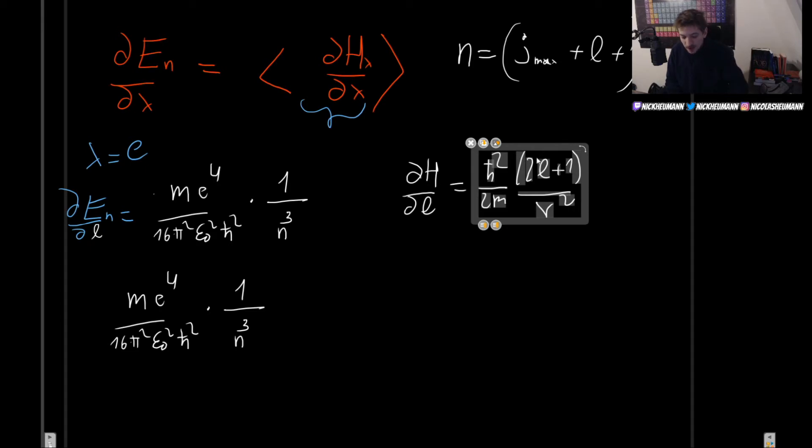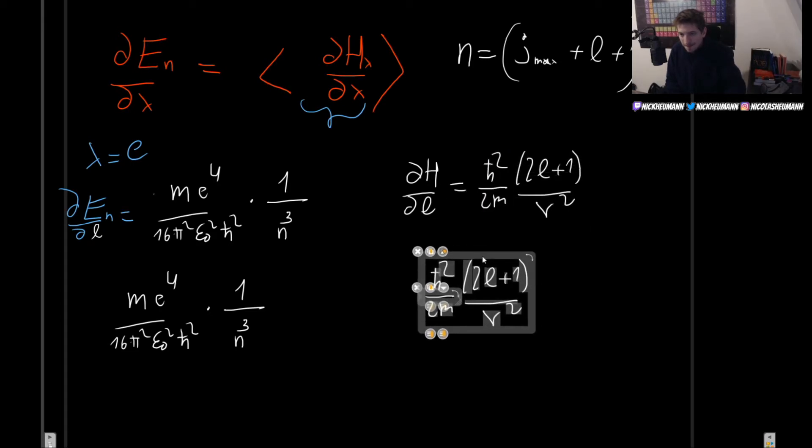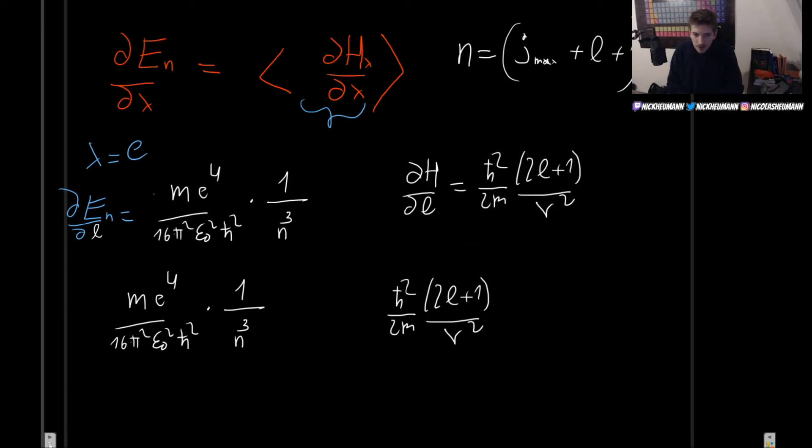This has to be equal to the expectation value of what we have there. So, this is going to be equal to this. Once again, we can pull out all of the constants from in here. So, that basically means we're going to get the expectation value. So, we get h bar squared 2m times 2l plus 1 times the expectation value of 1 over r squared.